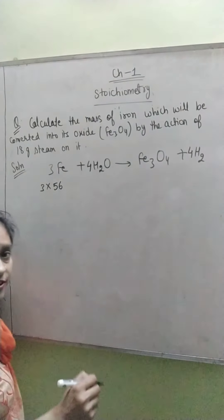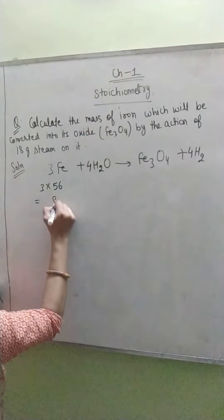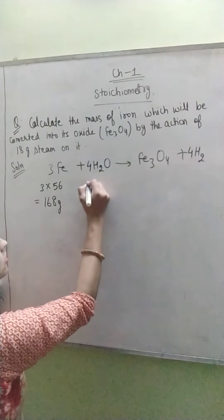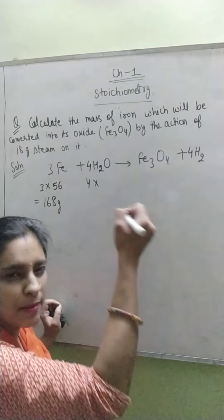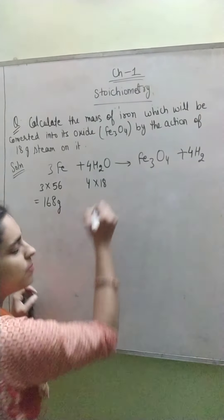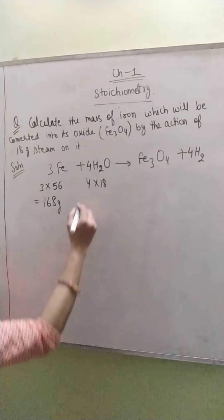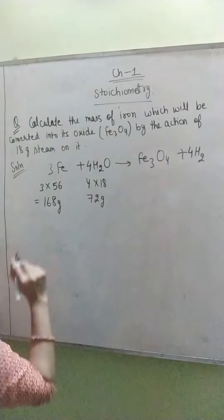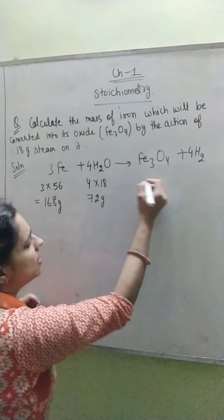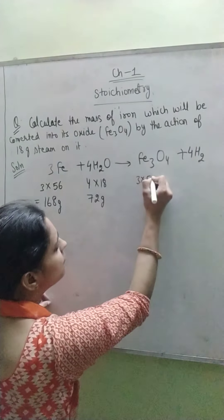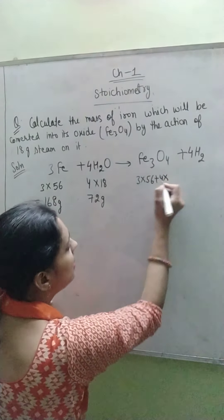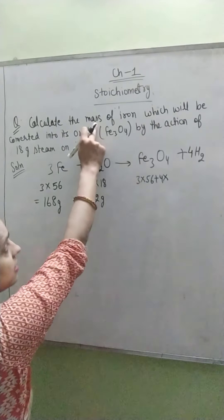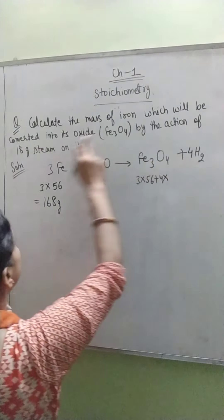Now I have to write down the number of moles and calculate the molecular masses below the chemical formula. So 3 into 56 (iron atomic mass) gives 168 grams. For water: 4 into 18 gives 72 grams. Since the problem asks about the mass of iron converted by the action of 18 grams of steam, I need the relationship between steam (reactant side) and iron. You can also calculate the molecular masses for the product side, but I will focus on the reactant side relationship here.